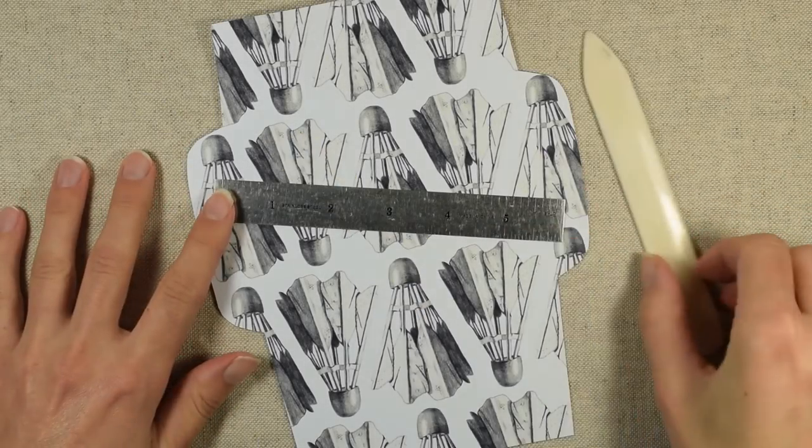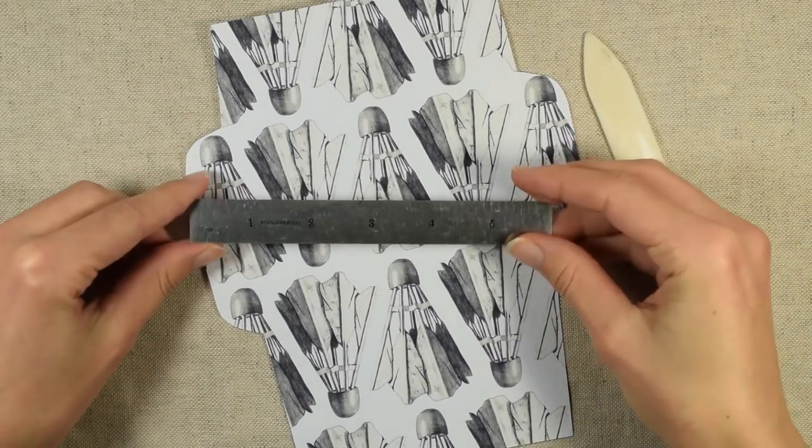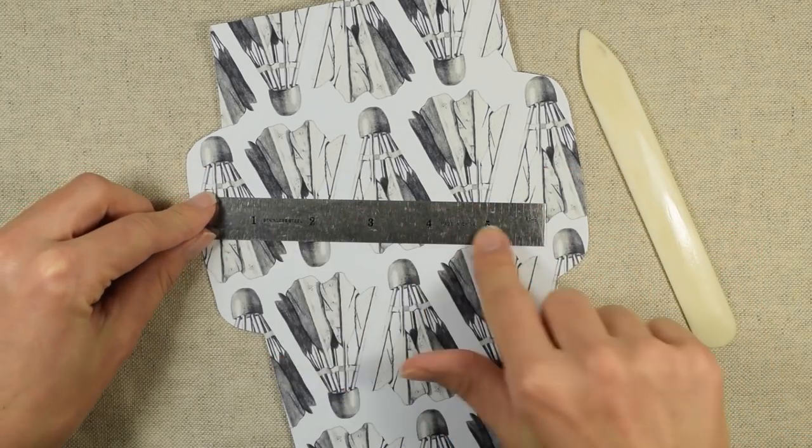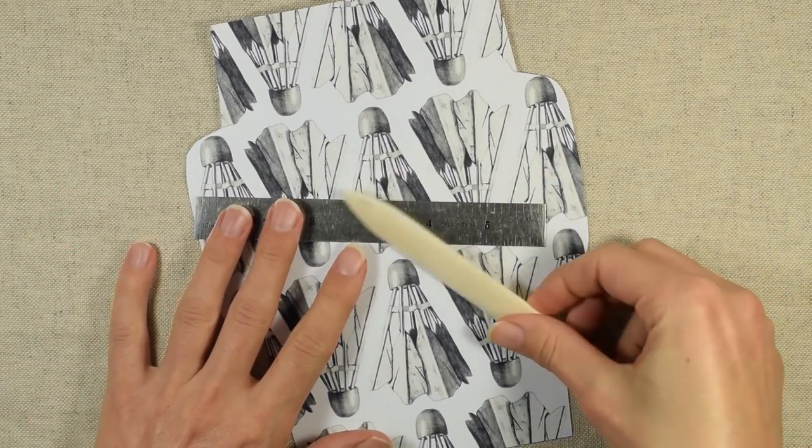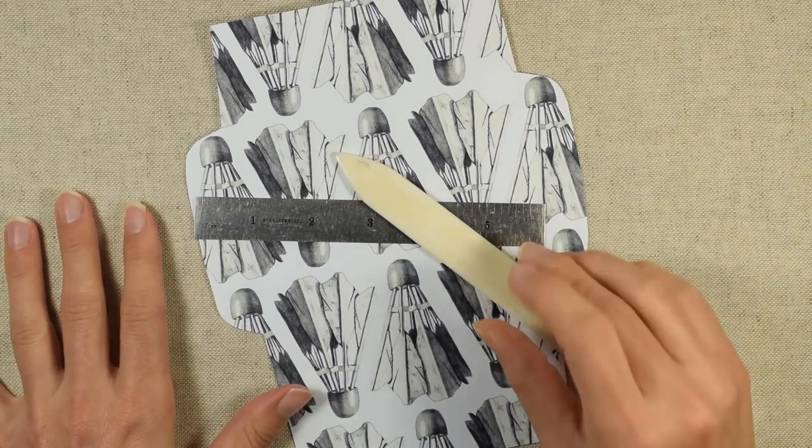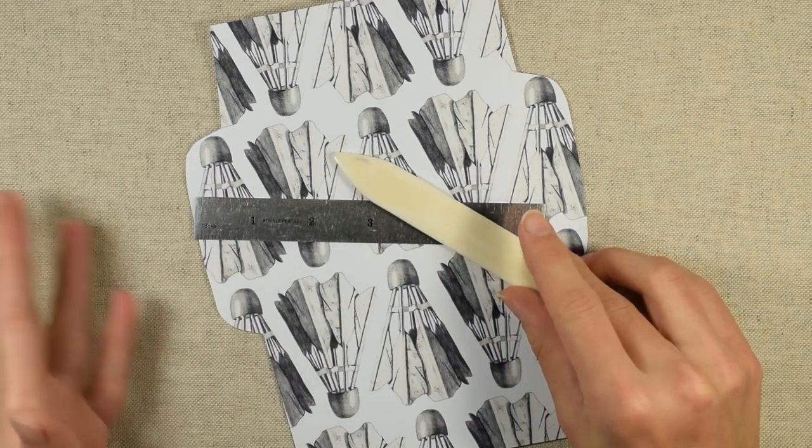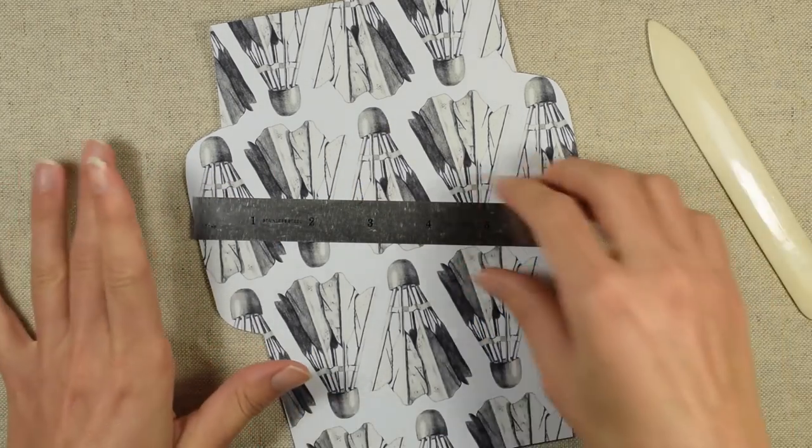At this point, you will want to grab some sort of straight edge thin tool, like a ruler. And then if you have one, and only if you have one, a bone folder. This is a bit of a specialized tool. So if you don't have one of these, don't worry about it.